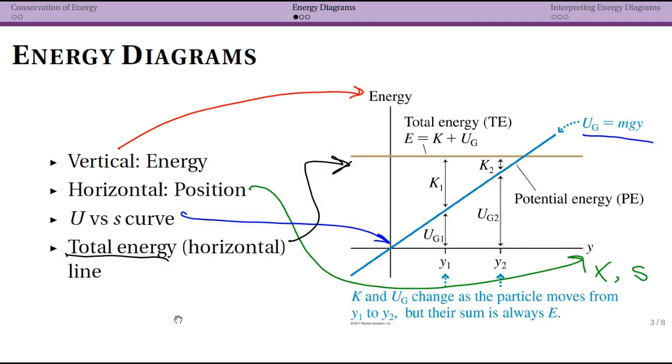conservation of mechanical energy. So this is not changing, and that's going to be the sum of your kinetic and your potential. So this line is actually specific to your particle, while the blue line for potential is more specific